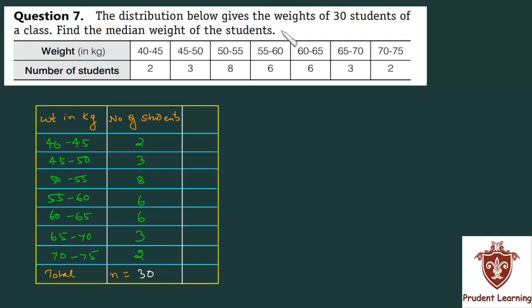The distribution below gives the weights of 30 students of a class. Find the median weight of the students. You have to find the weight of the students. This class interval is given, and the corresponding number of students is given. Total students - we have to find the median weight of the students.